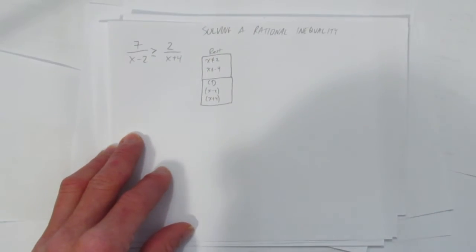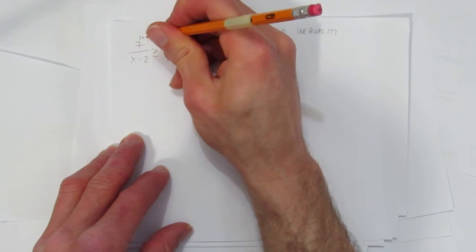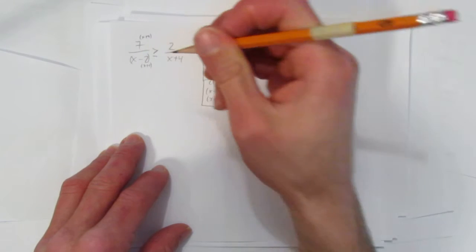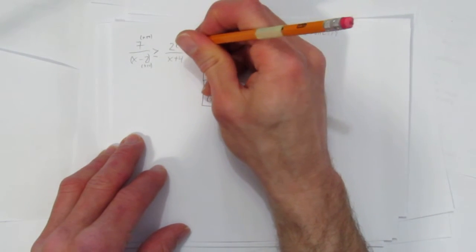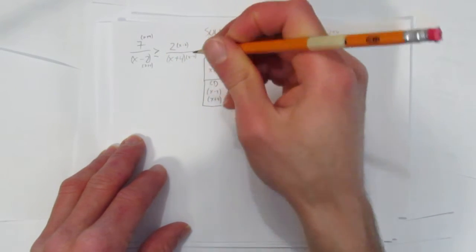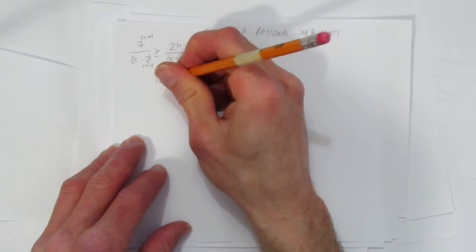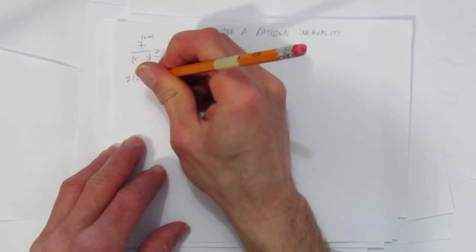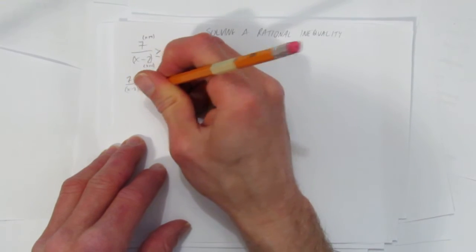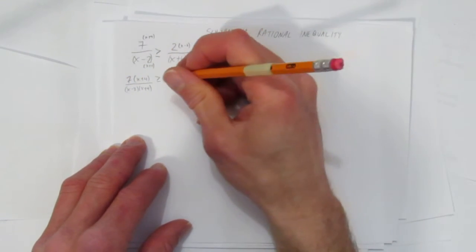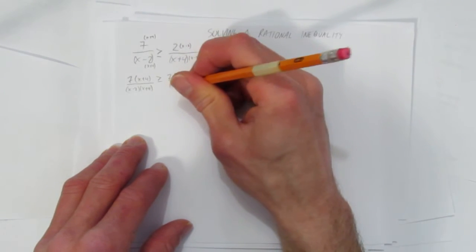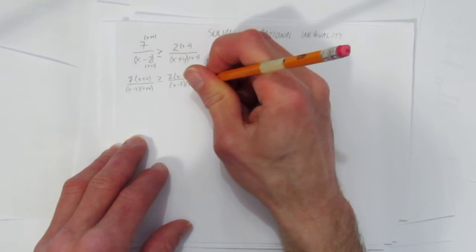Alright, let's use that common denominator. We've got to multiply this side times x plus 4, which means multiply this side times x plus 4. And what denominator is missing here? An x minus 2, so we need to multiply this side by x minus 2. So we get 7 times x plus 4 all over x minus 2 times x plus 4. And on this side we get 2 times x minus 2 over, write them in the same order, x minus 2 times x plus 4.